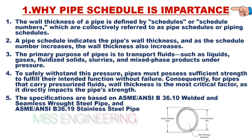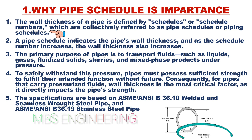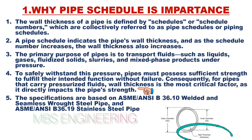Next, we will learn why a pipe schedule is important. The wall thickness of a pipe is defined by schedules or schedule numbers, which are collectively referred to as pipe schedules or piping schedules. A pipe schedule indicates the pipe's wall thickness, and as the schedule number increases, the wall thickness also increases. The primary purpose of pipes is to transport fluids such as liquids, gases, fluidized solids, slurries, and mixed-phase products under pressure. To safely withstand this pressure, pipes must possess sufficient strength to fulfill their intended function without failure.